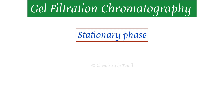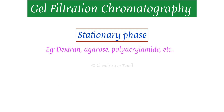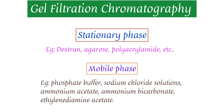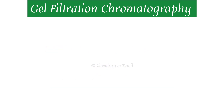Examples of the stationary phase include Dextran, agarose, and polyacrylamide. Examples of the mobile phase include phosphate buffer, borate buffer, NaCl, acetate buffer, ammonium acetate, ammonium bicarbonate, ethylene diamine, etc.